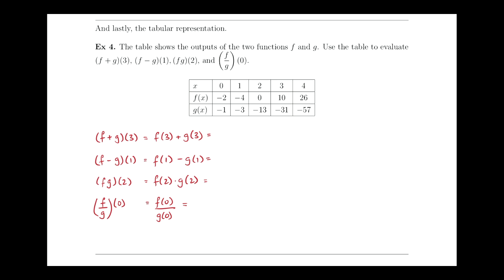f of 3 from this table is 10, plus g of 3 is negative 31. So this will be negative 21.